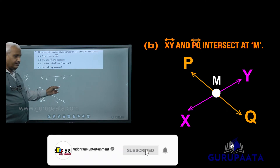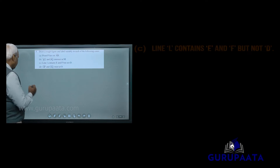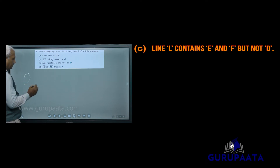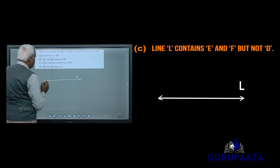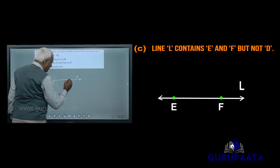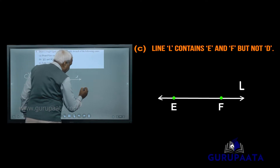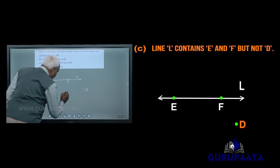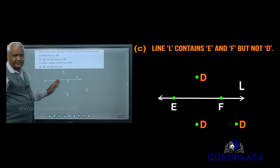Here XY is a line and PQ is a line and they are intersecting at point M. Now we will take question number C of question number 5. We have drawn a line L, a point E contained on the line, a point F contained on the line, but D is not on the line. You can write D anywhere off the line. That is the correct answer.